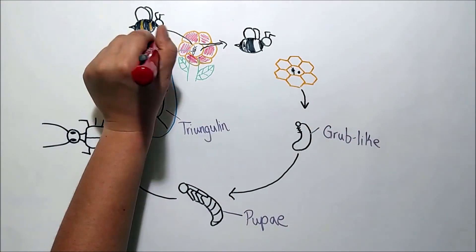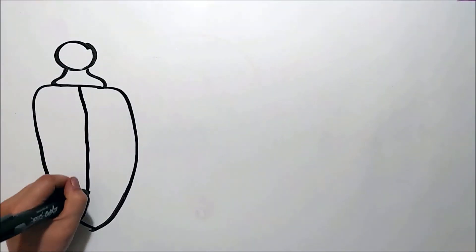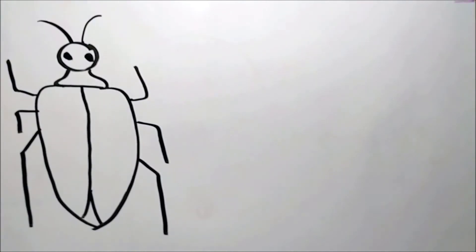This is all very cool, but what about this chemical that I mentioned before? Well, the adult blister beetle can secrete a toxic chemical called cantharidin.